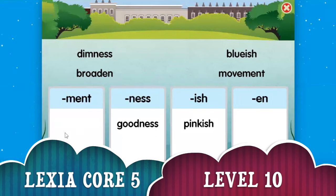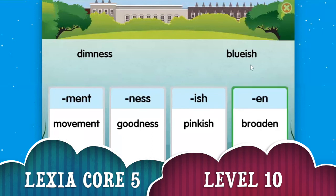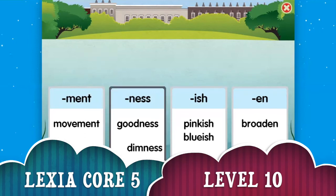Okay, movement — where does that go? Goes to ment. Yep. Where does Brodin go, Mifoos? Brodin goes with n. Yes. And ish goes — bluish goes with ish. Dimness goes with ness.